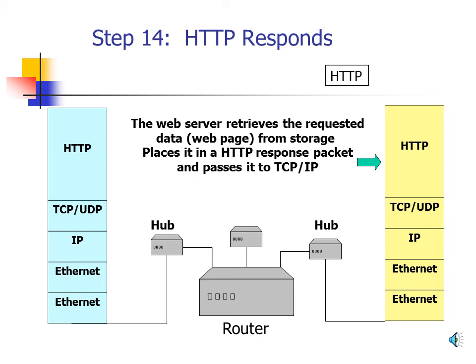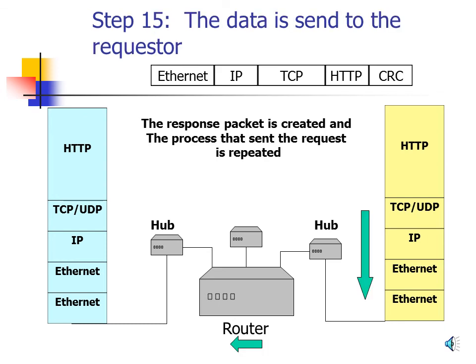Step 15: The Data Is Sent Back to the Requester. The HTTP response packet is given to TCP, which adds its headers; TCP hands it to IP, which adds its headers; and then it's given to Ethernet. Ethernet sends the packet through the router back to the requesting station.